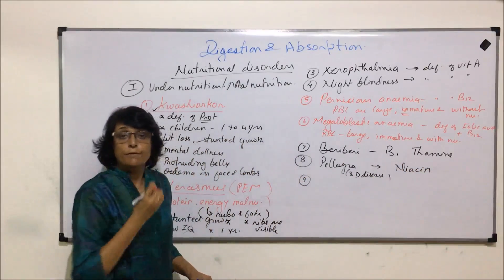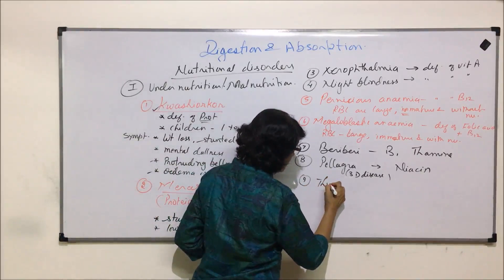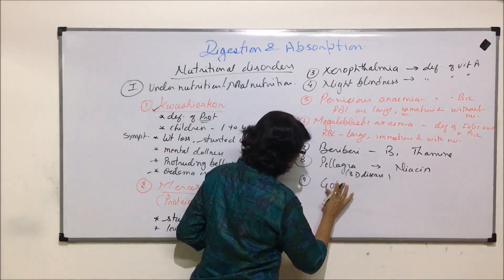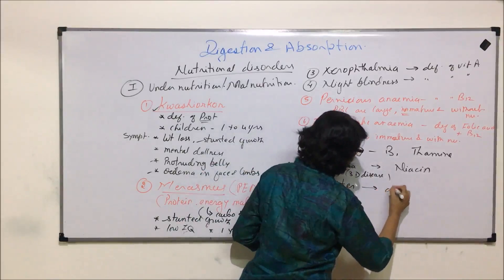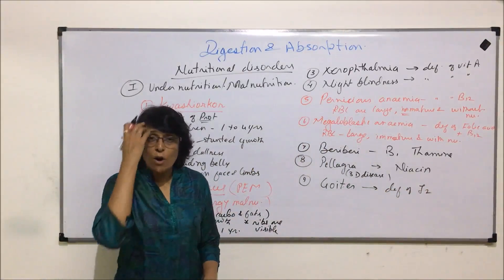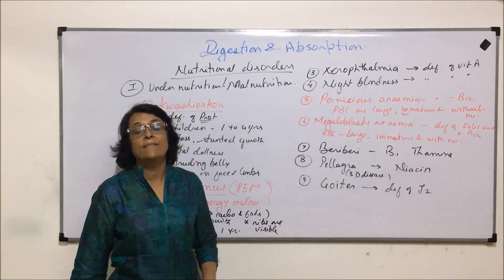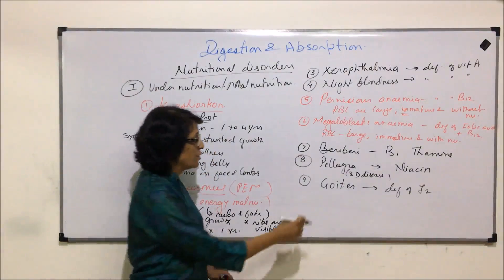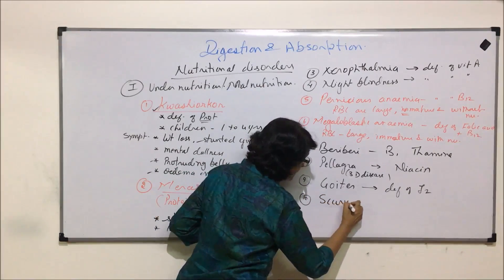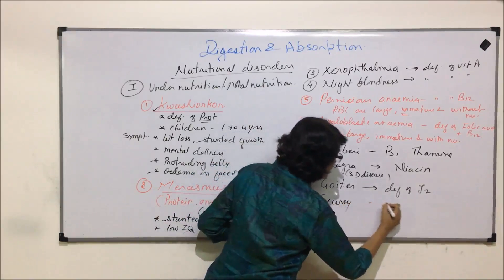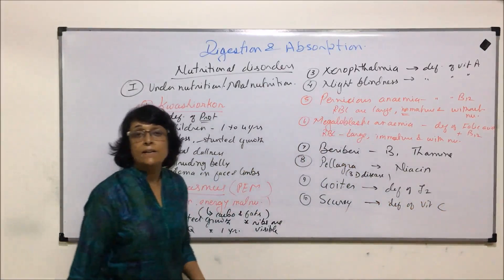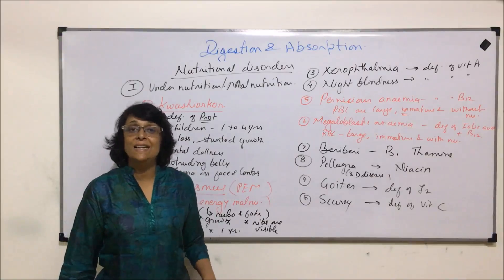Another disorder is goiter, which is due to deficiency of iodine. Because of iodine deficiency, thyroxine hormone formation is affected and the thyroid gland enlarges, which is known as goiter. We also discussed scurvy, which is due to deficiency of vitamin C, and it results in bleeding gums and delayed wound healing.